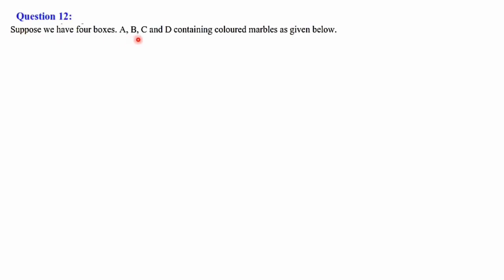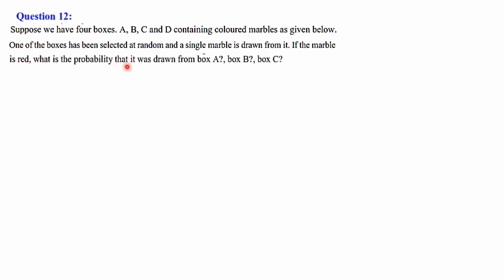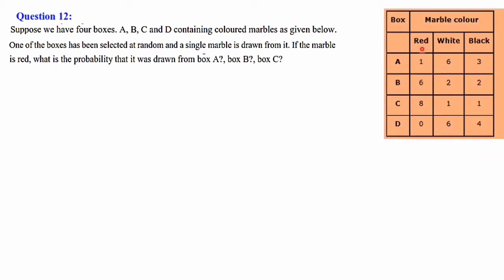We shall discuss question number 12. Suppose we have four boxes A, B, C and D containing colored marbles as given below. One of the boxes has been selected at random and a single marble is drawn from it. If the marble is red, what is the probability that it was drawn from box A, box B, and box C? A table is given mentioning the box labels and number of red, white and black balls.